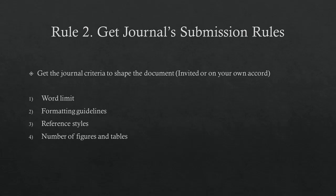Rule number two: get the journal submission rules for the article. Regardless of whether you're submitting a review by invitation or by your own accord, once you have the rules — such as the word count, formatting guidelines, reference styles, and the number of figures and tables — you have some criteria to shape the document. The paper should include references to all the key published work worldwide in your field of interest. Typically, papers contain at least 70 to 150 citations depending on the subject area. Figures and tables should be taken from past papers that are suitably acknowledged and illustrate the major points made in the text.